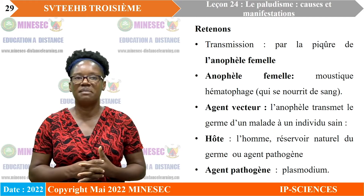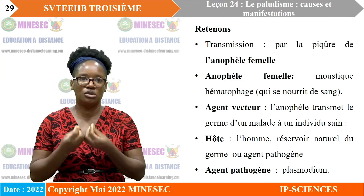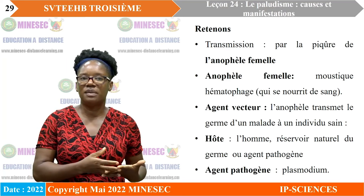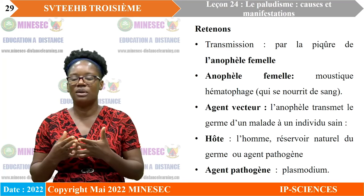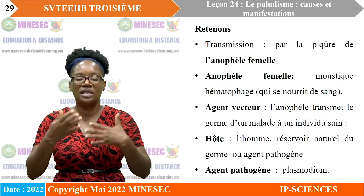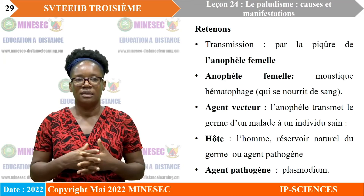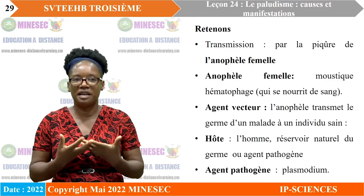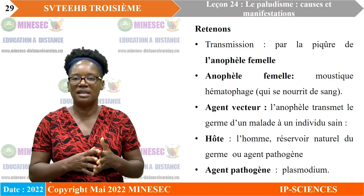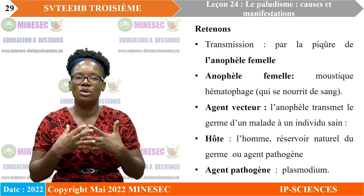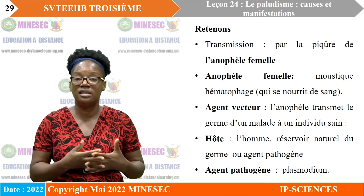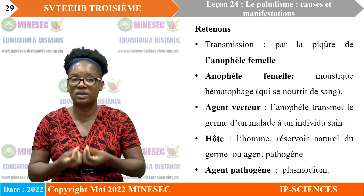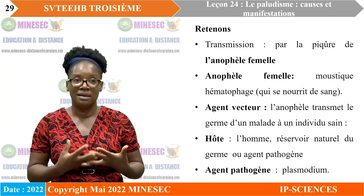L'anophèle femelle est un moustique hématophage, c'est-à-dire qui se nourrit du sang. Il transmet le germe d'un malade à un individu sain. L'agent pathogène du paludisme est le plasmodium, c'est-à-dire le microbe responsable de la maladie.